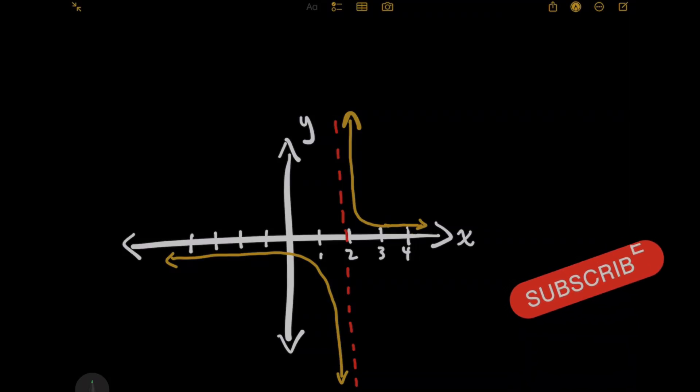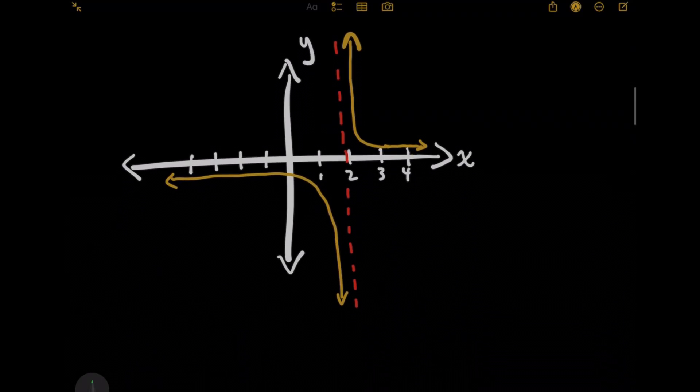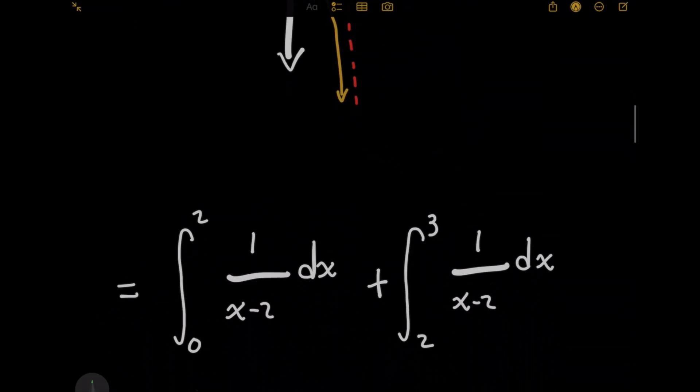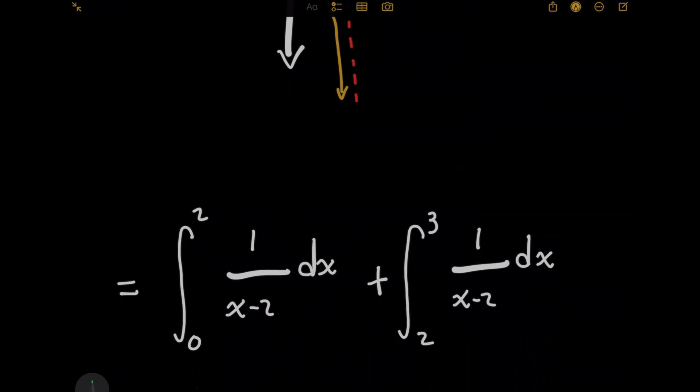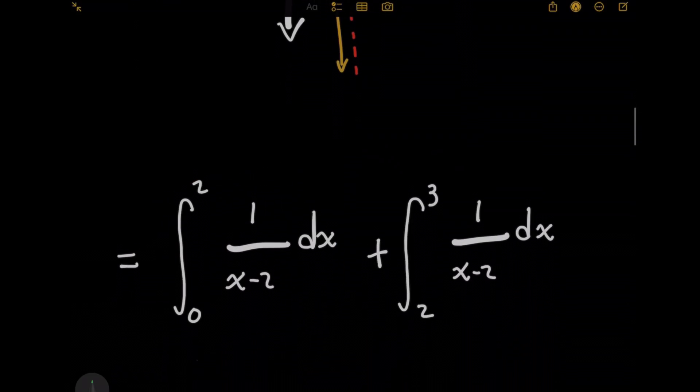But luckily, because a definite integral is talking about the area under the curve, we can actually get around this because if you remember with areas, you can break them up into pieces and then add the parts up to still get the right answer. So I'm going to break up the original integral into two parts, one that's to the left of the asymptote at x equals 2, and one that's to the right.